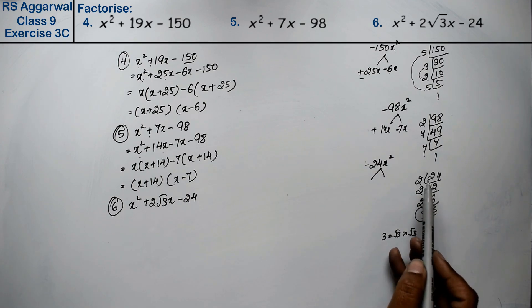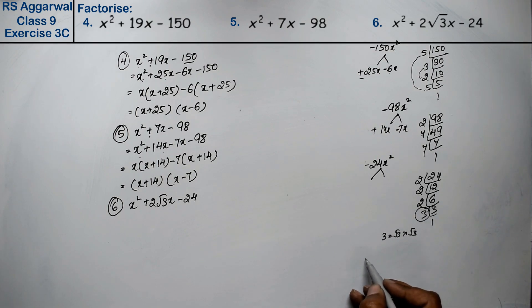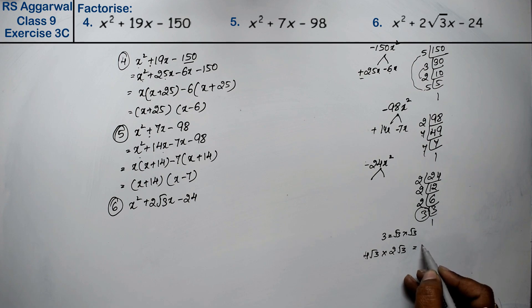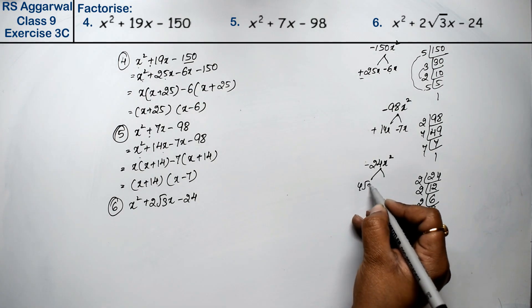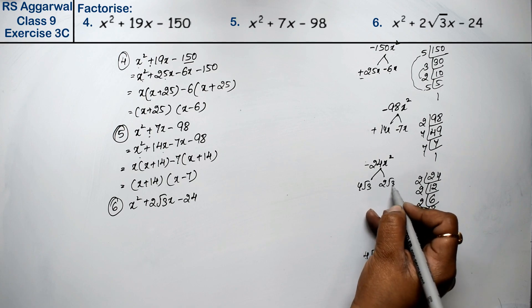This 3. Now 2 times 2 is 4 and 1 times 2. If I say 4 root 3 into 2 root 3, how much will it be? 4 times 2 is 8, 8 times 3 is 24. And if I minus, then what will it be? 2 root 3 will come. So now what factors have we found? 4 root 3 and 2 root 3 x.